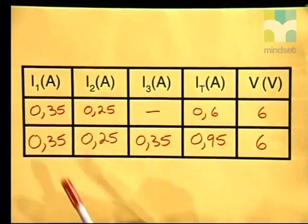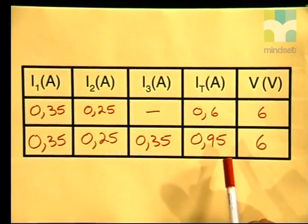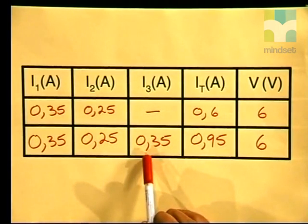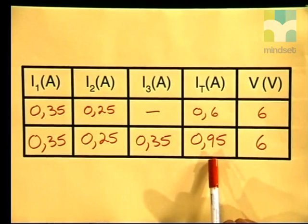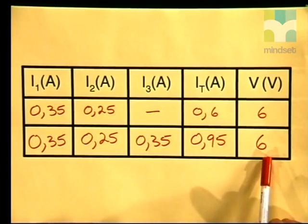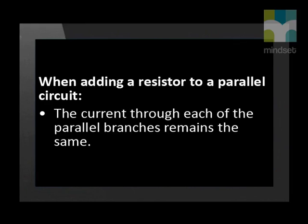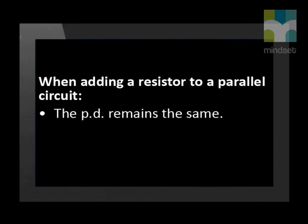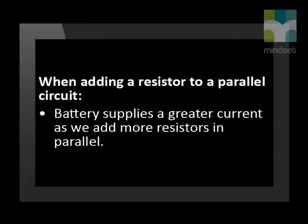Now what can we learn from these readings? The current through each of the parallel branches 1 and 2 remains exactly the same, but the current in the main circuit increases. Adding up the currents in the three branches gives 0.95 amperes, which is exactly the same as the reading on the ammeter in the main circuit. The potential difference remains the same across all three branches. So the battery supplies a greater current the more we add resistors in parallel. When adding a resistor to a parallel circuit: the current through each branch remains the same, the current in the main circuit increases, the potential difference remains the same, and the battery supplies a greater current.